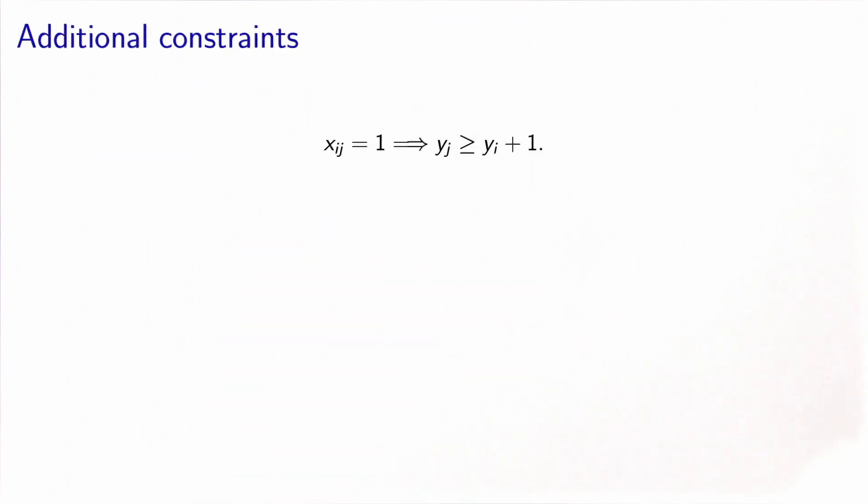Now, this condition is a logical condition, but we have seen rules to translate logical conditions into mathematical formulation for an optimization problem. I let you do it as a modeling exercise using the optional constraints that we have seen before. What we obtain is the following constraint: xij(n-1) + yi - yj ≤ n-2. This is the constraint. Note that it's a linear constraint in the decision variables.